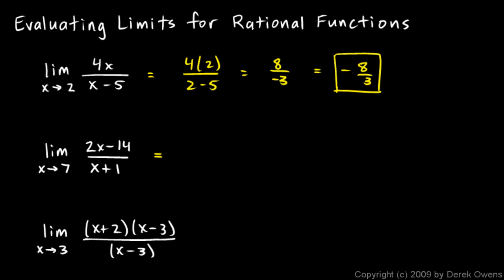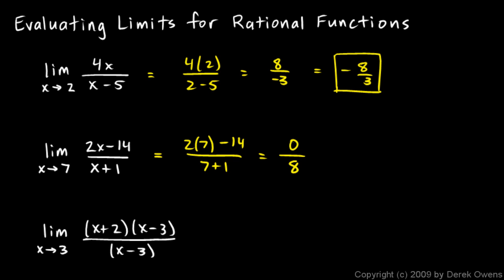Sometimes zeros show up. Look at this next example — let's try taking an x value of 7 and plugging it in: that's 2 times 7 minus 14 over 7 plus 1, which is 0 over 8, and 0 over 8 is of course 0. A zero numerator is not a problem at all — 0 over some number is simply 0. Don't worry about a zero numerator unless you also have a zero denominator.